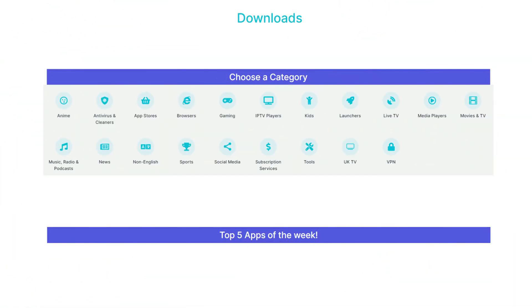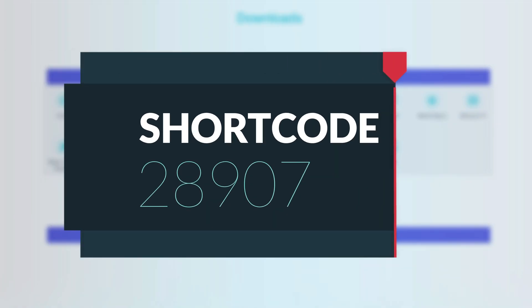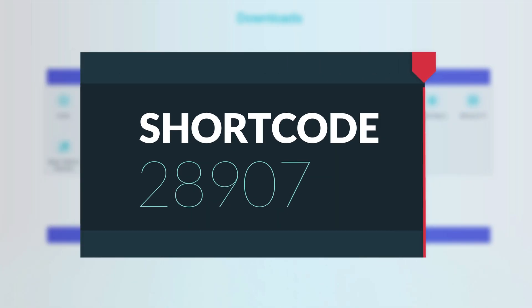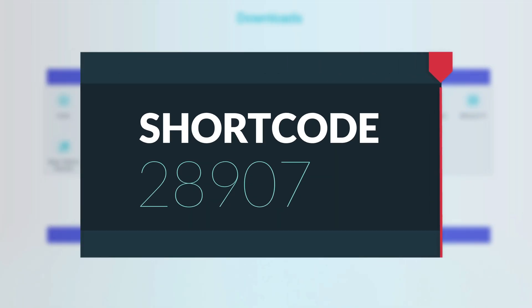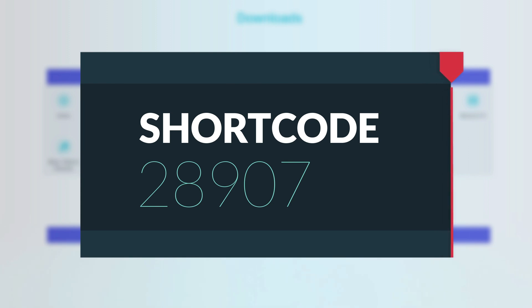Go back to my Downloads page using the shortcode 28907 in the Downloader app and take a look at the complete list of even more amazing free apps to install on your Fire Stick.